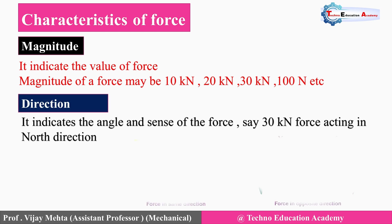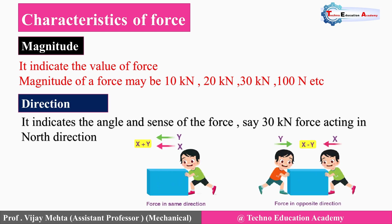The second characteristic is the direction of force. It indicates the angle and sense of the force — for example, a 30 kN force acting in the north direction, in the same direction, or in the opposite direction. So force is represented by its magnitude, such as 20 kN or 30 kN, and its direction.